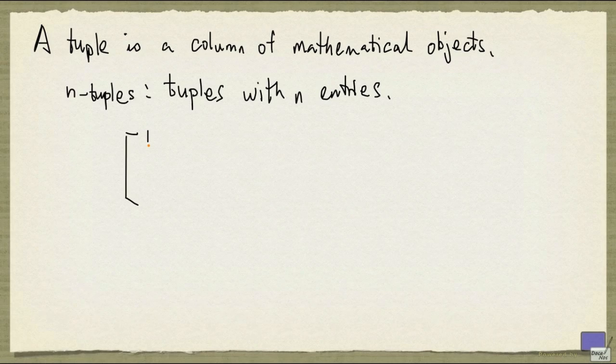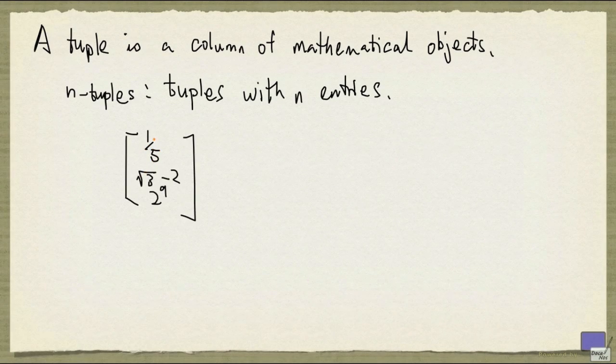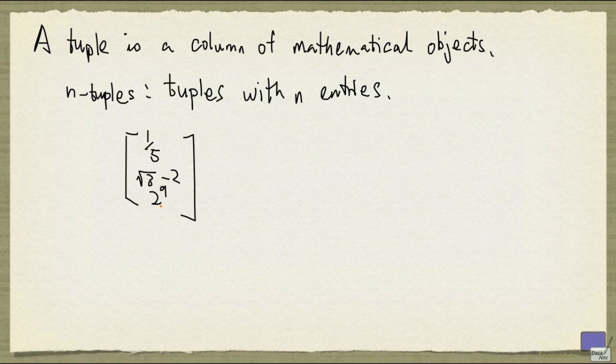Here is a 3-tuple. The entries are 1 over 5, square of 3 minus 2, and 2 to the 9.